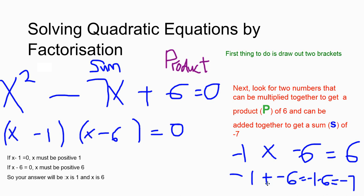We can't have two symbols next to each other. When you combine a positive and a negative, you would have a negative. So, negative 1 minus 6 is negative 7. The two numbers will be negative 1 and negative 6, and then you can solve the problem. If x minus 1 is 0, your x must be positive 1. If x minus 6 is 0, your x must be 6. So, your answer will be x is 1 or x is 6.